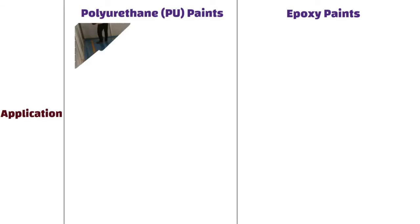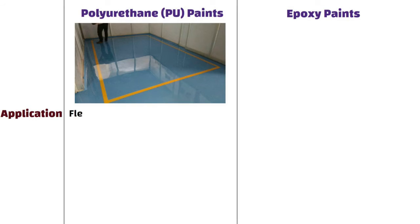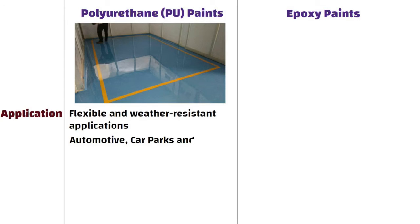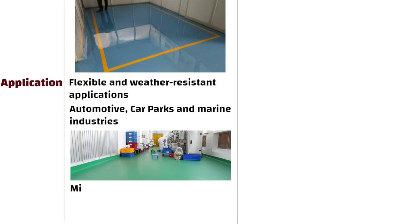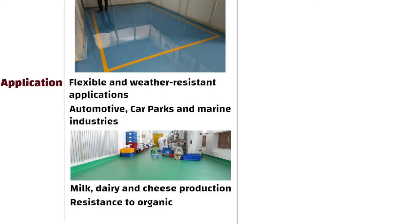Applications. Polyurethane paints are ideal for flexible and weather-resistant applications, like in automotive, car parks and marine industries. They are recommended for food processing, such as milk, dairy and cheese production, due to their resistance to organic acids without corroding or yellowing.